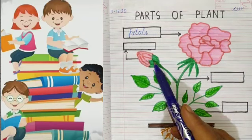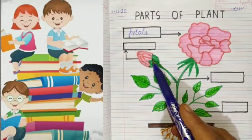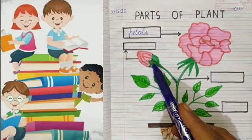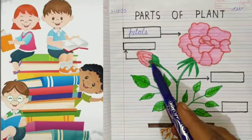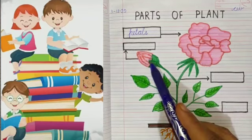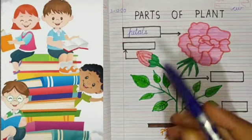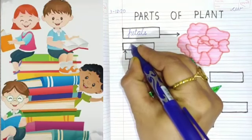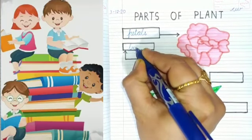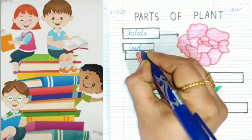A bud. When a flower blooms, before that it's a small baby, and after that the bud becomes a flower. So what is this? Bud. Write down: B-U-D, bud.